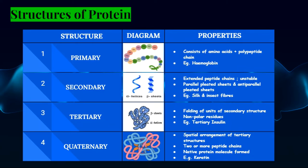Then we have tertiary structure. This involves the folding of regular units of secondary structure as well as disordered areas of the peptide chain. When alpha helices and beta sheets fold and form a more complex, messier structure, it is called tertiary. An example is insulin. These involve hydrophobic residues.